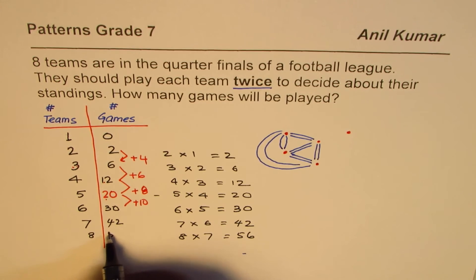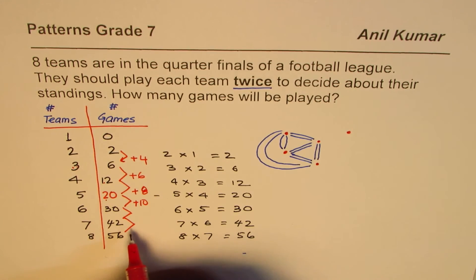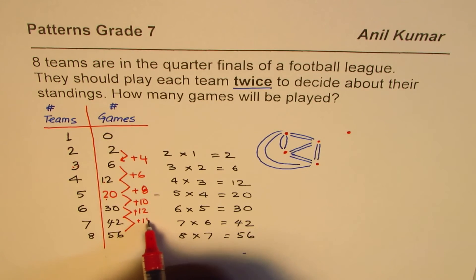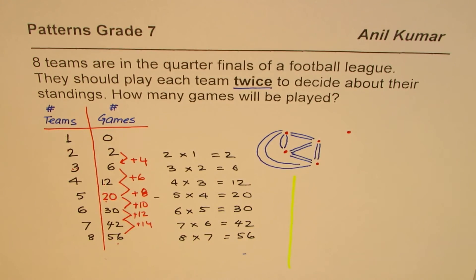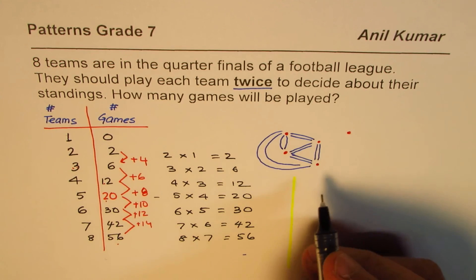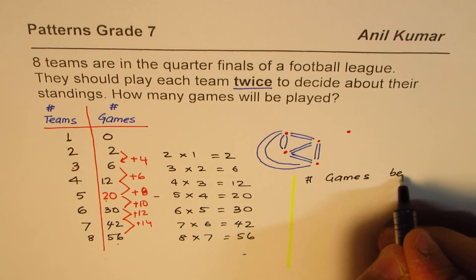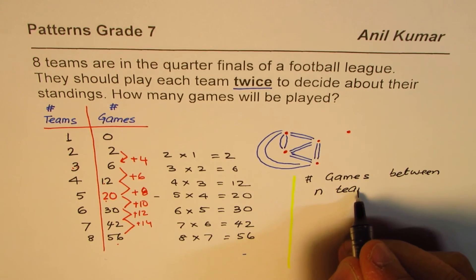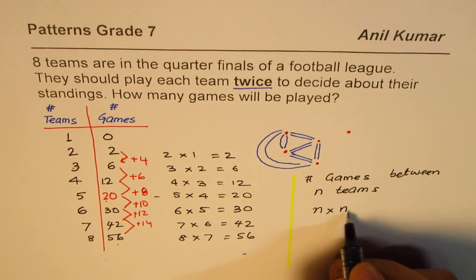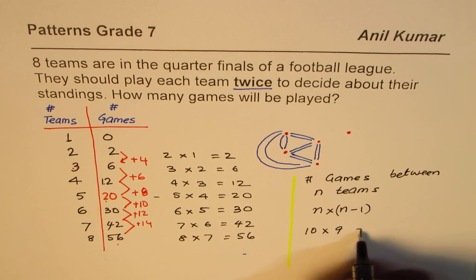As an exercise, you can verify this by adding twelve then fourteen to confirm the totals for seven and eight teams. On the other hand, I'll give you the pattern rule: the number of games between n teams is n times (n minus one). So if there are ten teams, ten times nine gives you ninety games.